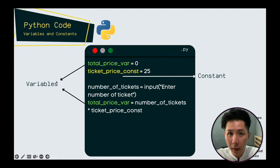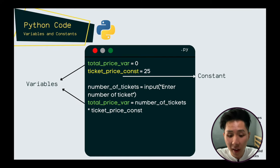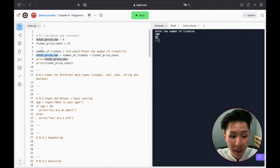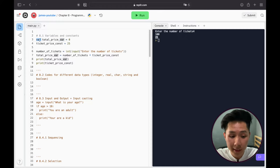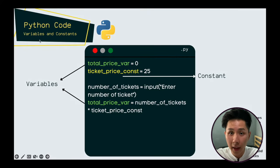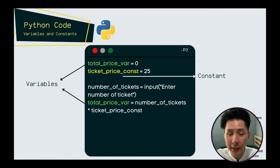That's just a small illustration of the difference between a variable and a constant. Do note that in other programming languages like Java, you can write 'var' in front of your variable to let the program know it's a variable and not a constant. But in Python, they do not have this function. Therefore, we use naming conventions to differentiate between variables and constants.